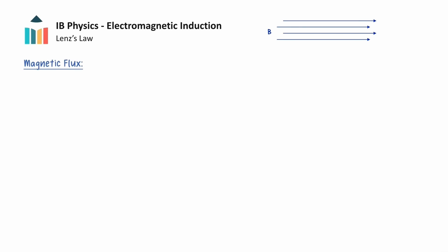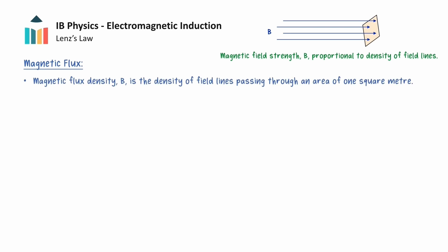Before we define magnetic flux, let's note that the magnetic field strength is proportional to the density of magnetic field lines. When the field lines are close together, there will be many field lines through a given area, and we have a strong magnetic field. In particular, we use the term magnetic flux density as a measure of the density of the magnetic field lines passing through a unit area of 1 square meter, and this is a more formal name for magnetic field strength.